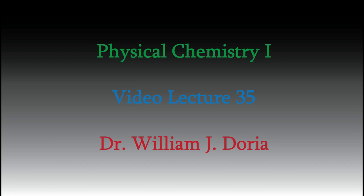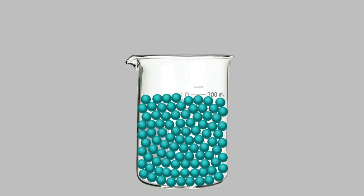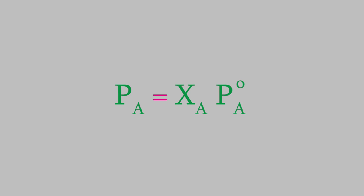Hi, and welcome again to my videos for Physical Chemistry 1. In the last video, we looked at solutions consisting of a solid or gas dissolved in a liquid, and we also talked about vapor pressure, the pressure exerted by a gas as it escapes from the surface of a liquid. We found out that the vapor pressure decreases when we add a solute to the liquid, and we can express the connection between the concentration of the solute and the vapor pressure of the solvent using this equation, which is called Raoult's Law.